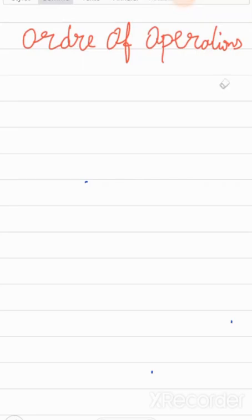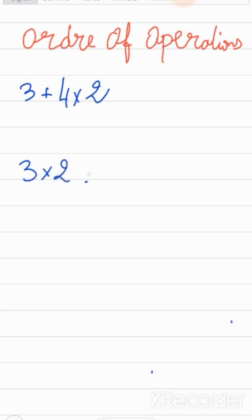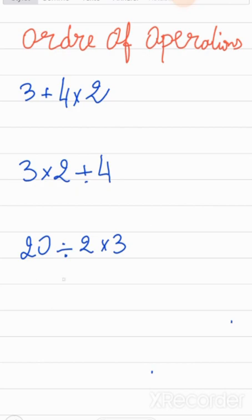Order of operations. Let's say we're going to calculate 3 plus 4 times 2, or 3 times 2 plus 4, or 20 divided by 2 times 3, or in parentheses, 5 plus 7 times 2. We're going to go through these and other examples.